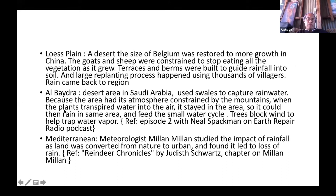In Al-Bajra, a desert area in Saudi Arabia, they used permaculture techniques to catch rainwater, which hydrated the plants. Because the atmosphere was constrained by the mountains, the transpired water vapor stayed in that area and could fall back as rain, creating a small water cycle. They also used trees to block the wind and trap that water vapor.